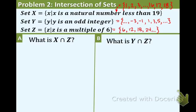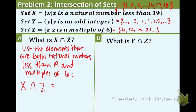So now in part A, we need to list the elements that are both natural numbers less than 19 and multiples of 6. That's what it means with X intersecting with Z. So the numbers that apply to both natural numbers less than 19 and multiples of 6 are 6, 12, and 18. There are no other numbers that apply to both set X and Z.